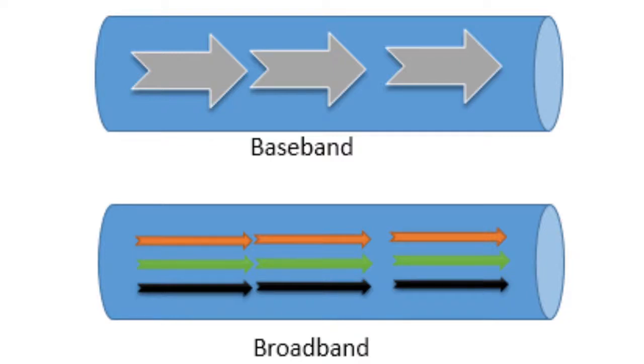The baseband signal is bidirectional so that a baseband system can both transmit and receive signals simultaneously.